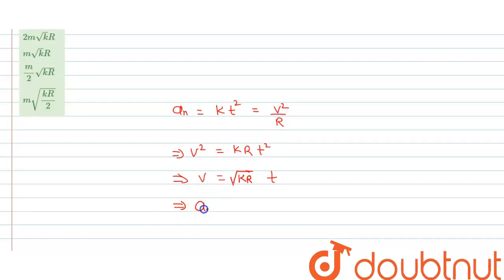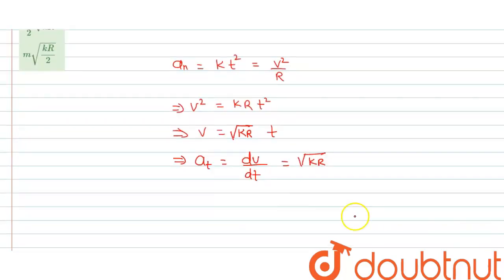So from here, if you want to calculate tangential acceleration at, which equals dv/dt, rate of change of speed. So √(kr) is a constant term and differentiation of t equals 1, so tangential acceleration is √(kr).